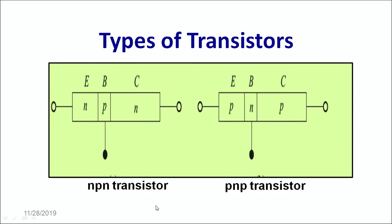So a given transistor will either have two P-type regions with an N-type region in between or vice versa. The three distinct regions are called the emitter, the base and the collector. There are two distinct kinds of transistors: an NPN transistor and a PNP transistor. In a PNP transistor, the emitter and collector are made of the P region and the base is made of the N region.